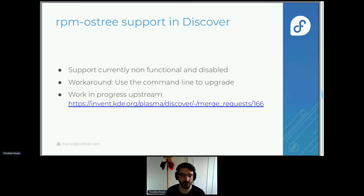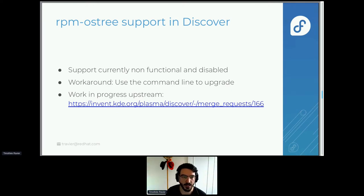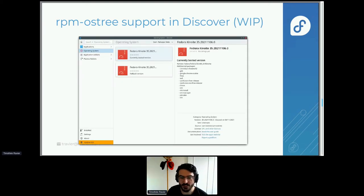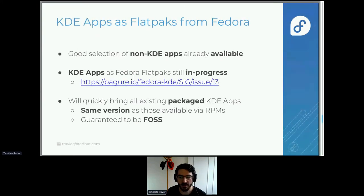The rpm-ostree support in Discover was initially made as part of Season of KDE by an Egyptian student who did great work to get it started. Unfortunately there's still one big bug that hasn't been tracked down, so it's still in progress. The command line still works perfectly. What it will look like when fixed: you'll open Discover and get all the versions of Fedora Kinoite you have installed in the system, the packages you've layered on top, and you'll be able to get updates and apply them directly from Discover.